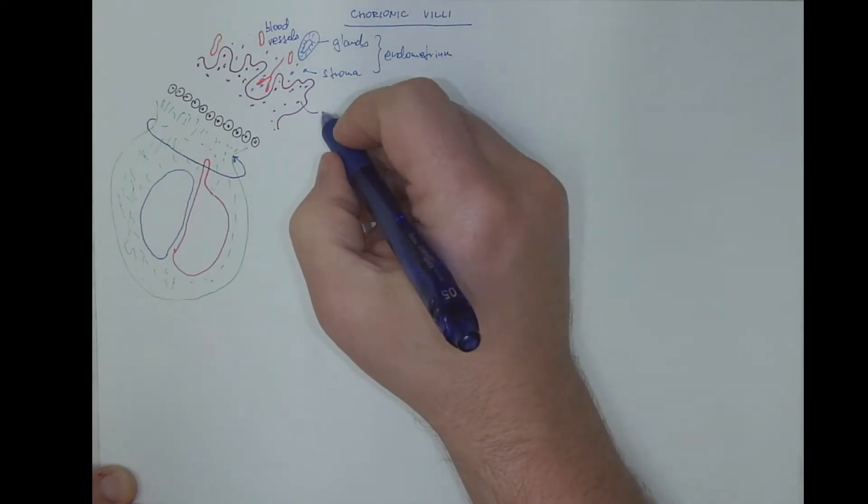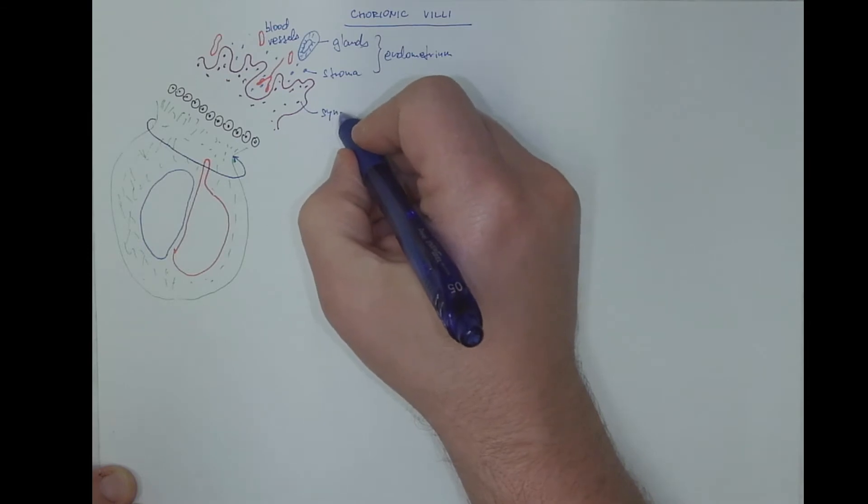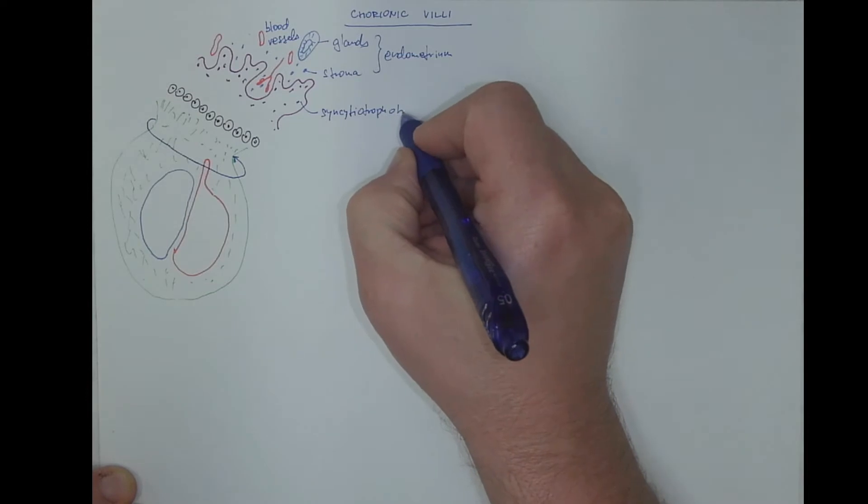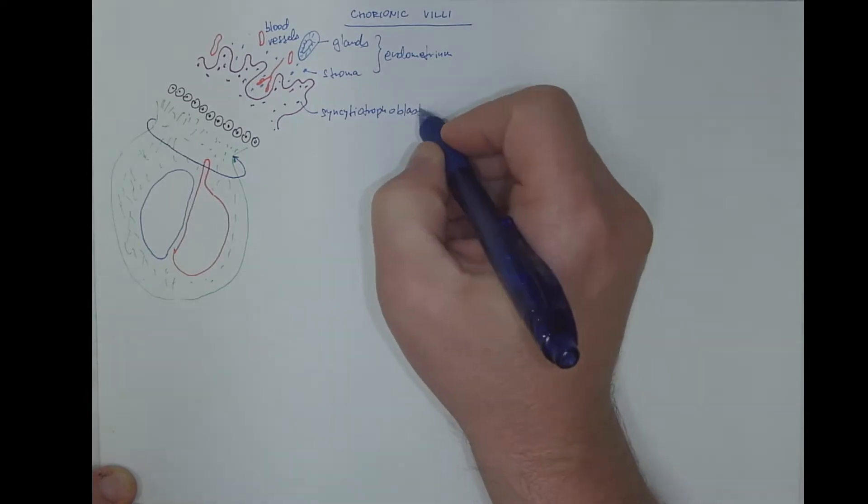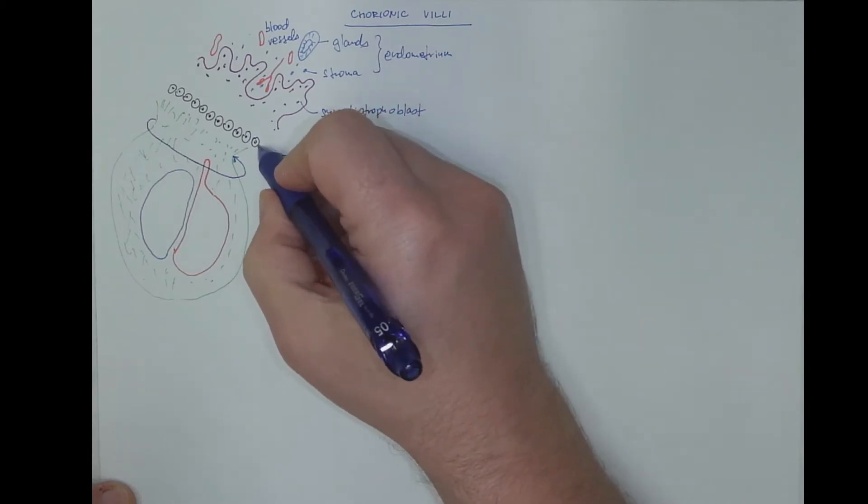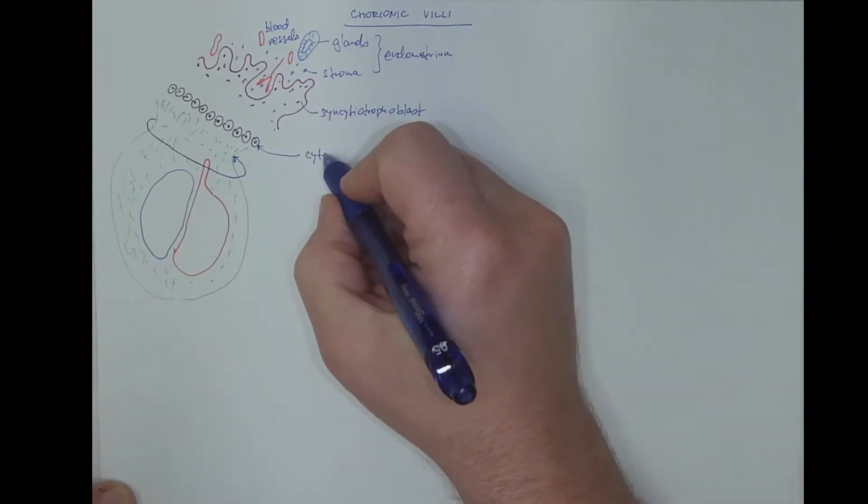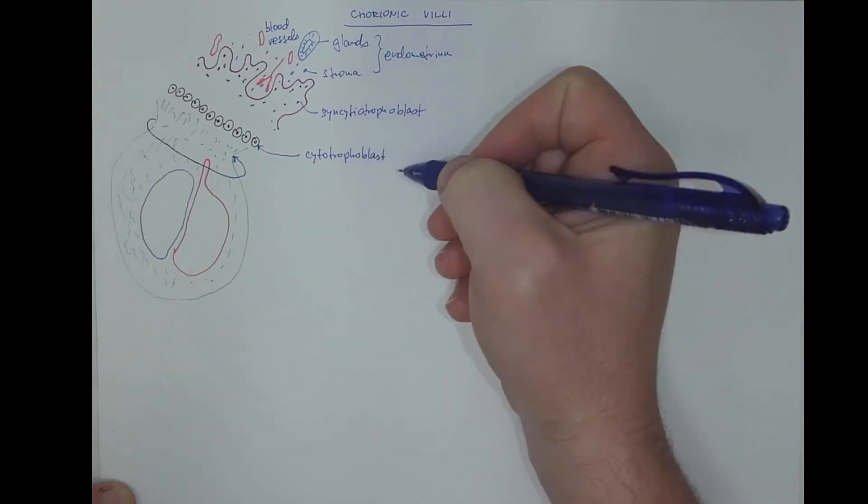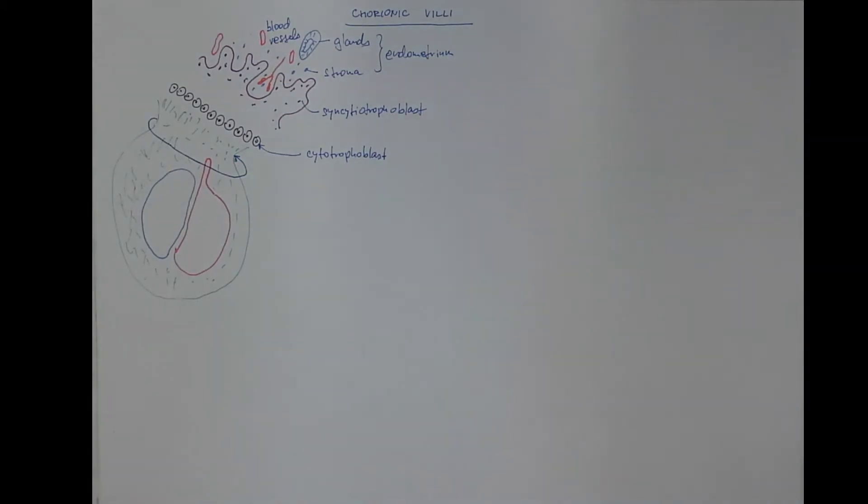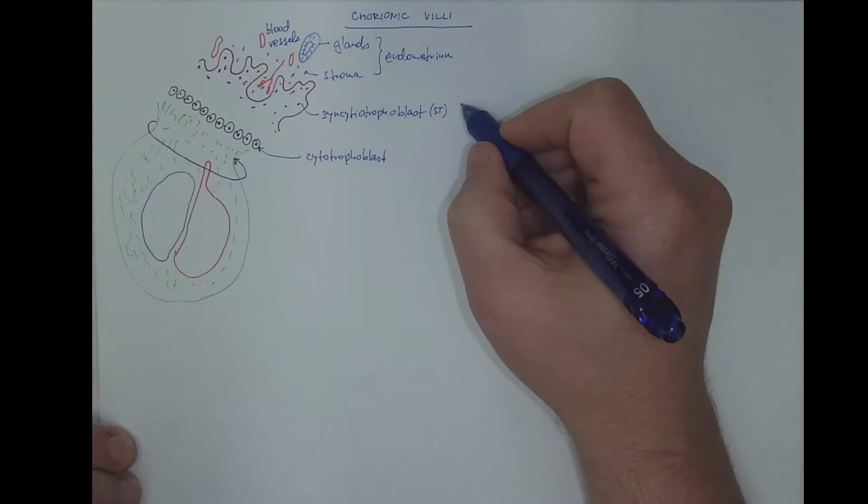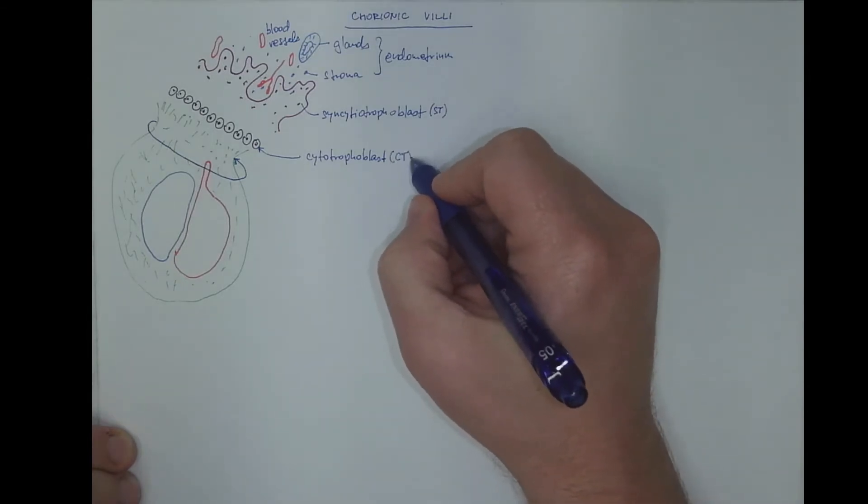Now this is the invading syncytiotrophoblast, underlined by the cytotrophoblast. I will abbreviate the syncytiotrophoblast as ST from now on and the cytotrophoblast as CT from now on.